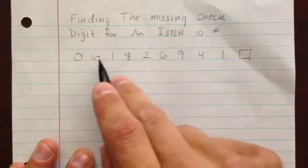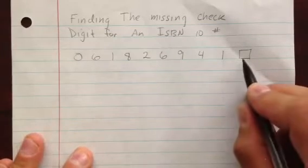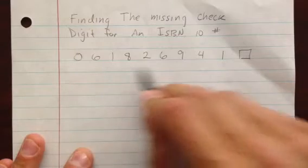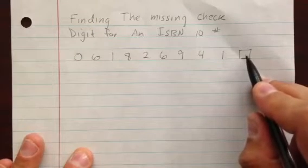That's 10 numbers. 1, 2, 3, 4, 5, 6, 7, 8, 9, 10. Good it is. Again, this one we're missing. We're going to put this through a process or an algorithm to find the missing number that belongs there.